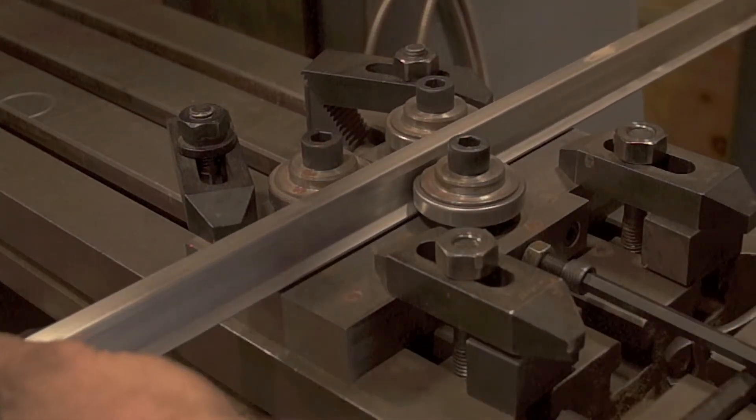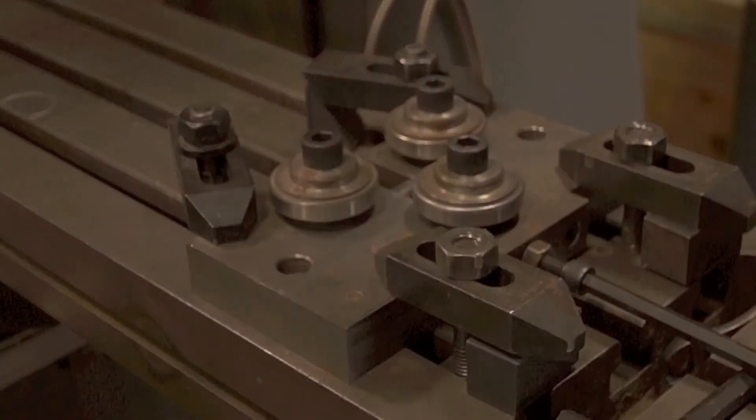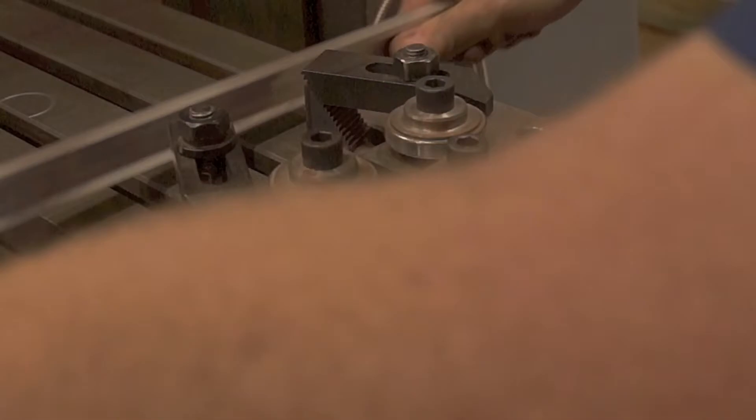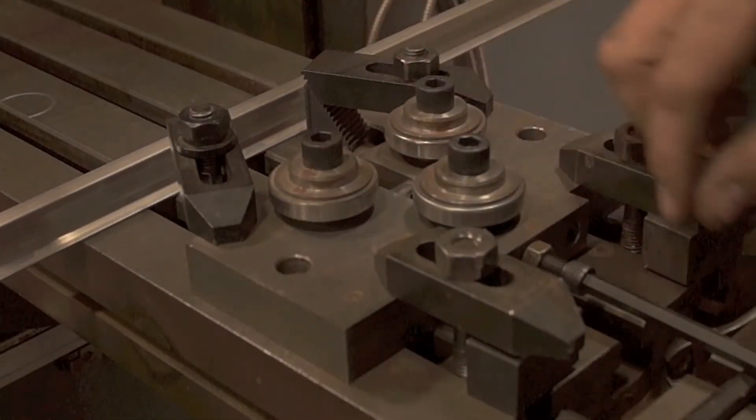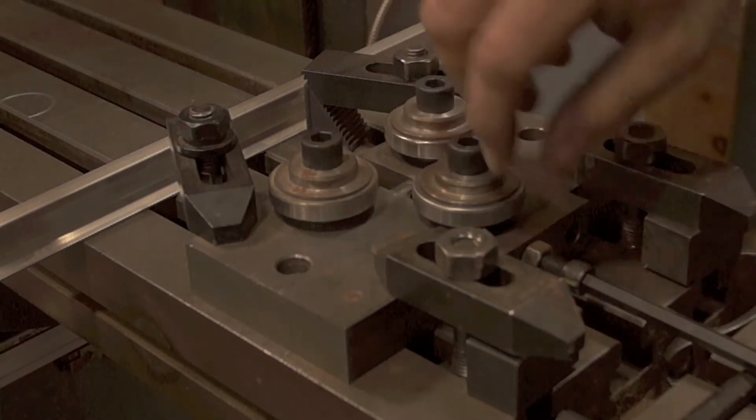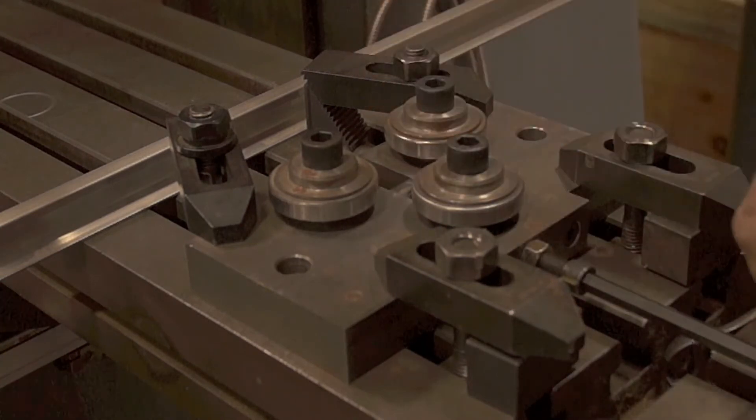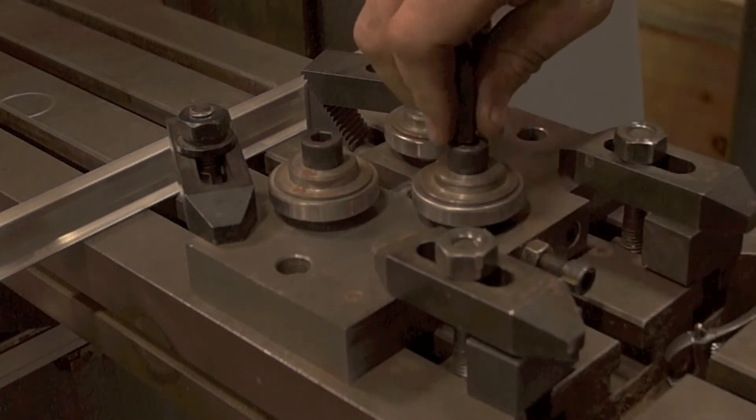So now that we've zeroed it out, we'll go ahead and start to adjust in a radius and by doing that, you want to just go in very small increments such as a quarter of a turn. Because oftentimes that's all it takes to get it just where you need it to be.